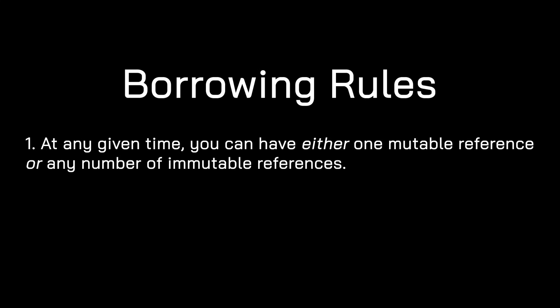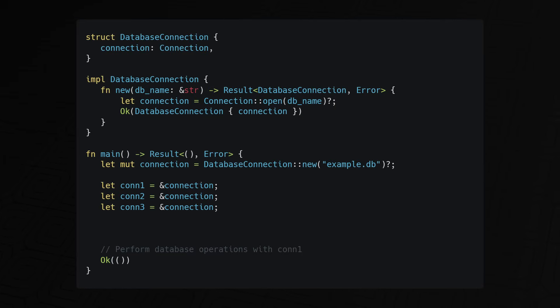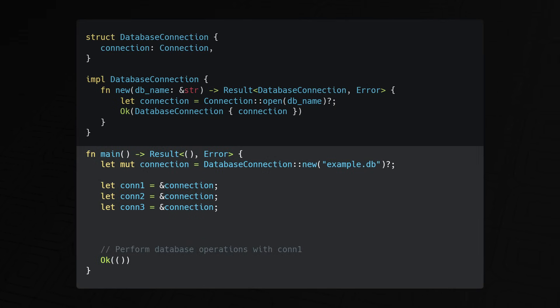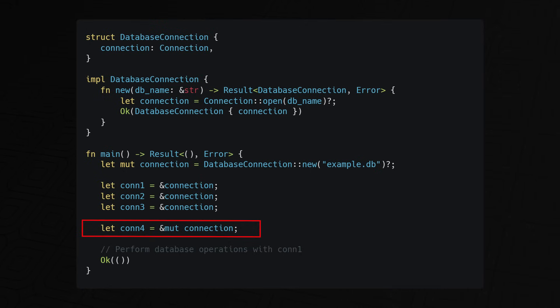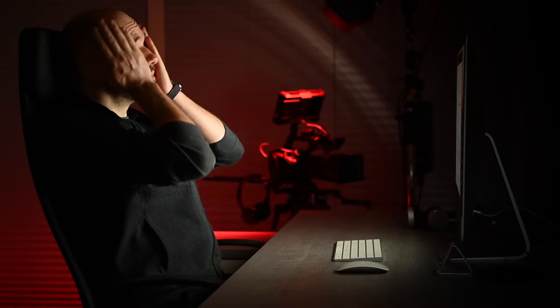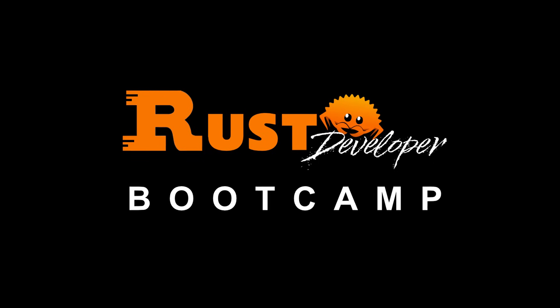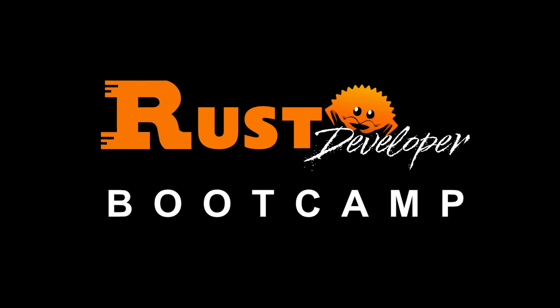Rust further builds on the ownership rules by combining them with borrowing rules. At any given time, you can either have one mutable reference or any number of immutable references, and references must always be valid. You can create multiple immutable references without any problem, but introducing one mutable reference alongside them causes a compile-time error. By enforcing these rules, Rust prevents data races and null pointer dereferencing. Ownership and borrowing are concepts many beginners struggle with, which is why exercises focused on these subjects are essential.